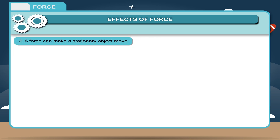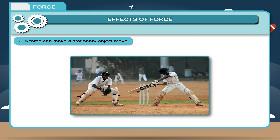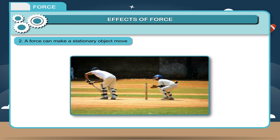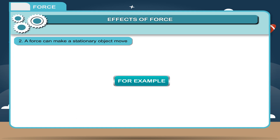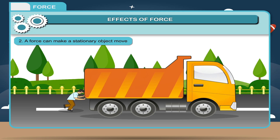A force can make a stationary object move. For example, when you hit a ball with a cricket bat, it moves. The force can increase the speed of a moving object if force is applied in the direction of motion. However, it is not necessary that a force will always make a stationary object move — if you push a heavy object like a bus or truck single-handedly, it will not move, because the force applied is not sufficient.